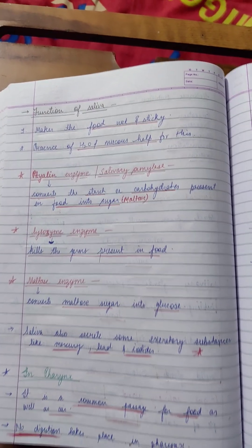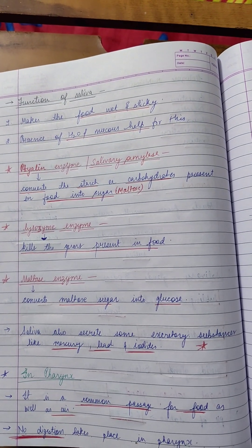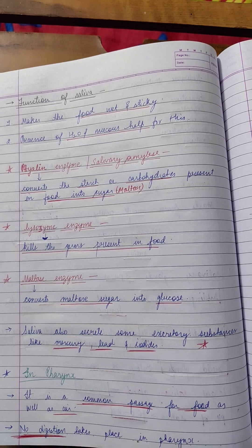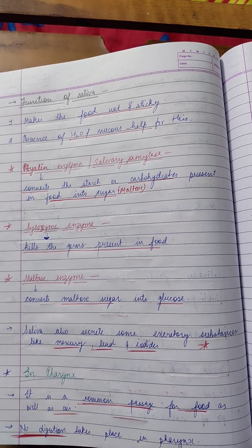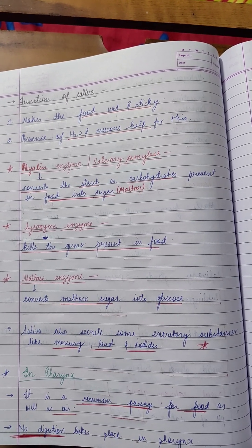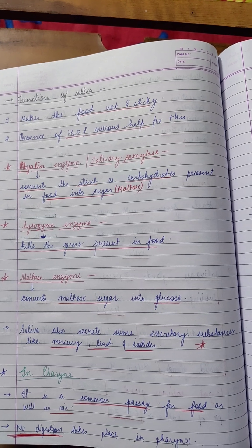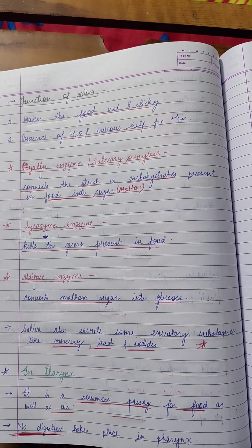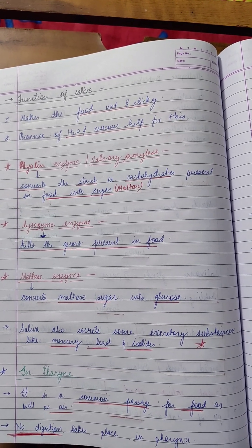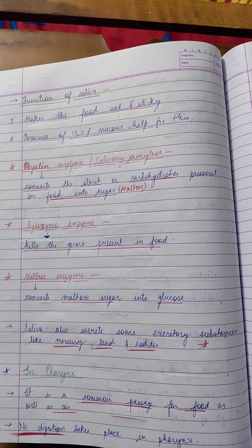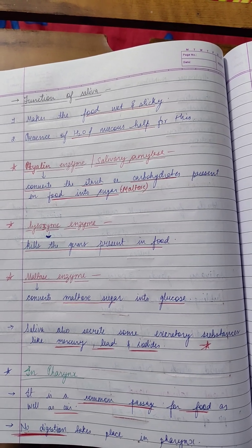The function of saliva is that it makes the food wet and sticky, and the presence of water and mucus helps for this. There are many enzymes like ptyalin enzyme, lysozyme enzyme, and maltase enzyme present, which help to digest the food in the mouth cavity.